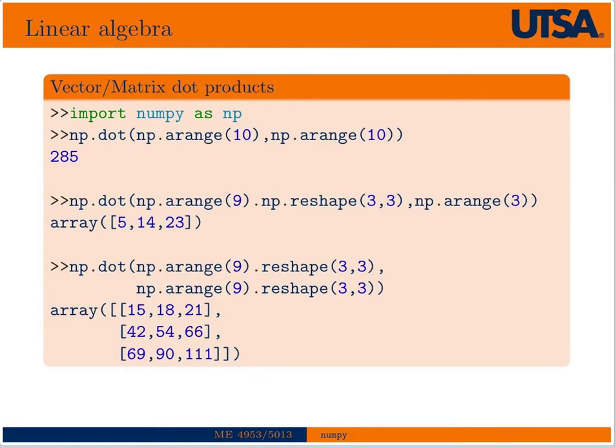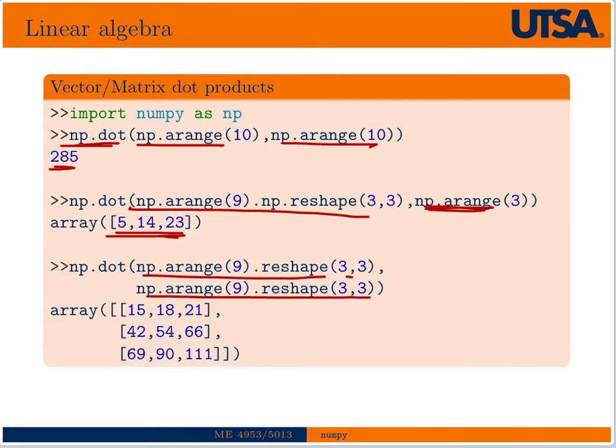So, as I mentioned, the dot product in NumPy, you actually have to call out the dot product. But it is sophisticated enough to know that if you're doing vector-vector multiplication, then you'll end up with a scalar. Versus if you're doing matrix-vector multiplication, then you end up with a vector. Or if you do matrix-matrix multiplication, you end up with a matrix. So it is smart enough to figure out what your intentions are when you use the dot product. But you have to explicitly call it out with the dot function there.